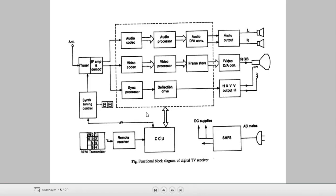Then we have the next block: audio codec, video codec, and synchronized processor. Now audio codec and video codec - if we know the signal we have received, then we have audio and video. If we talk about both of them, then we have different signals.